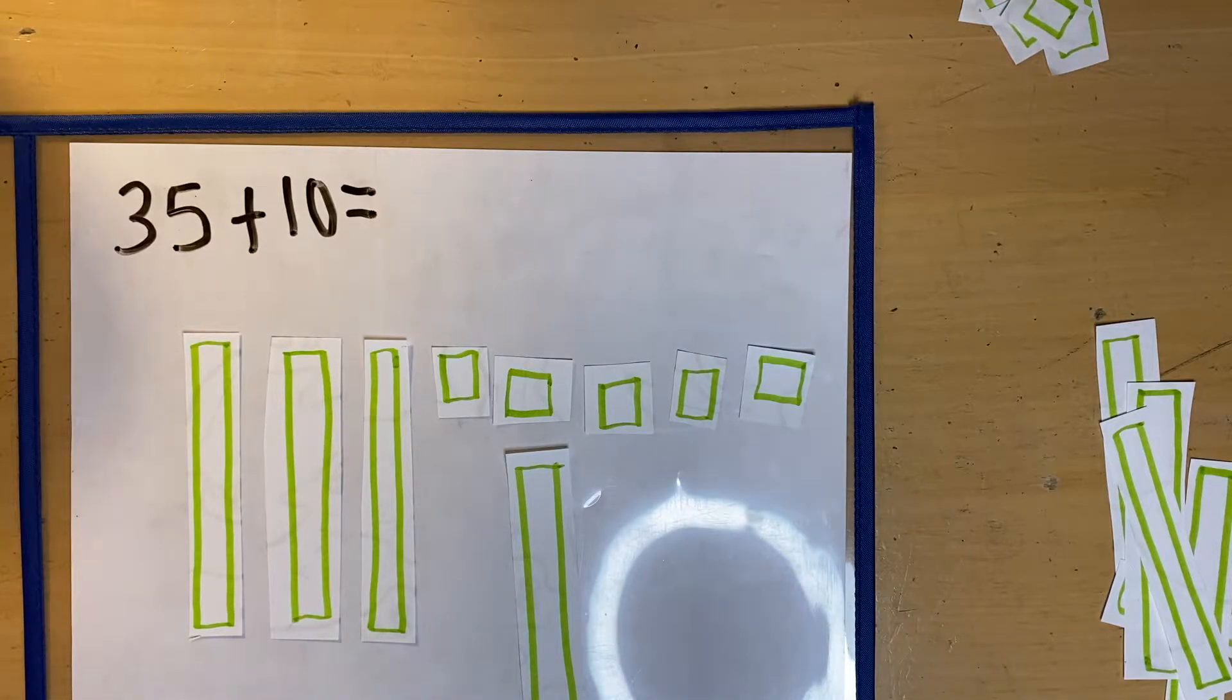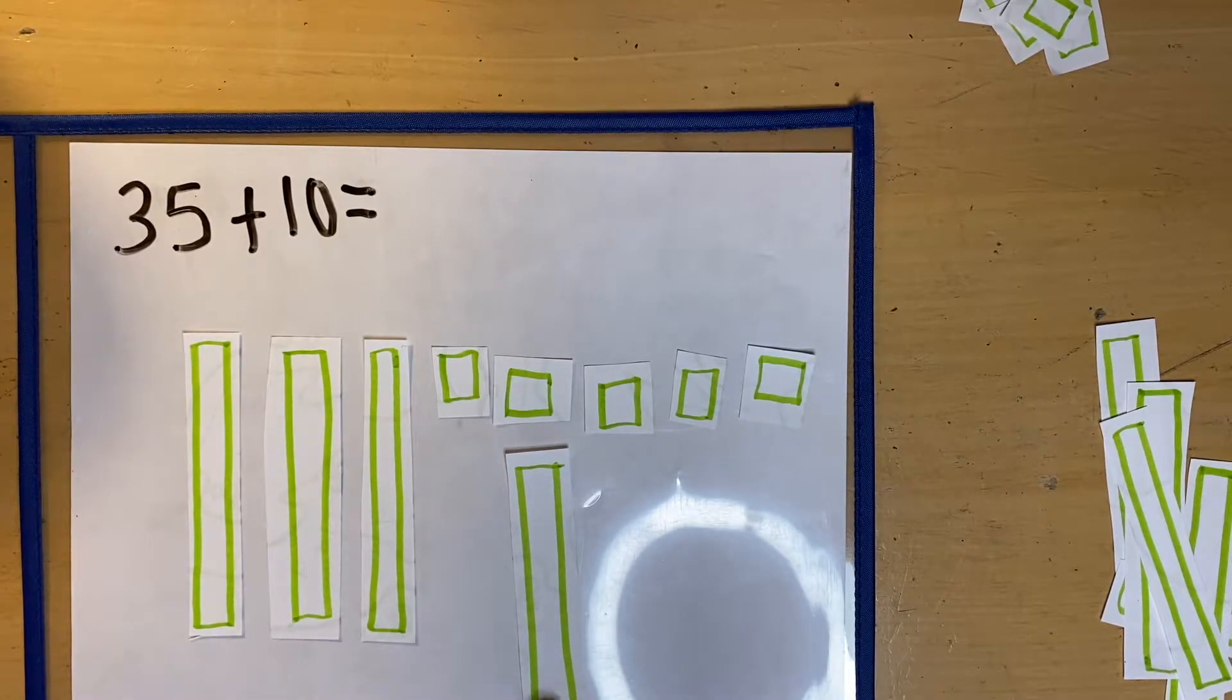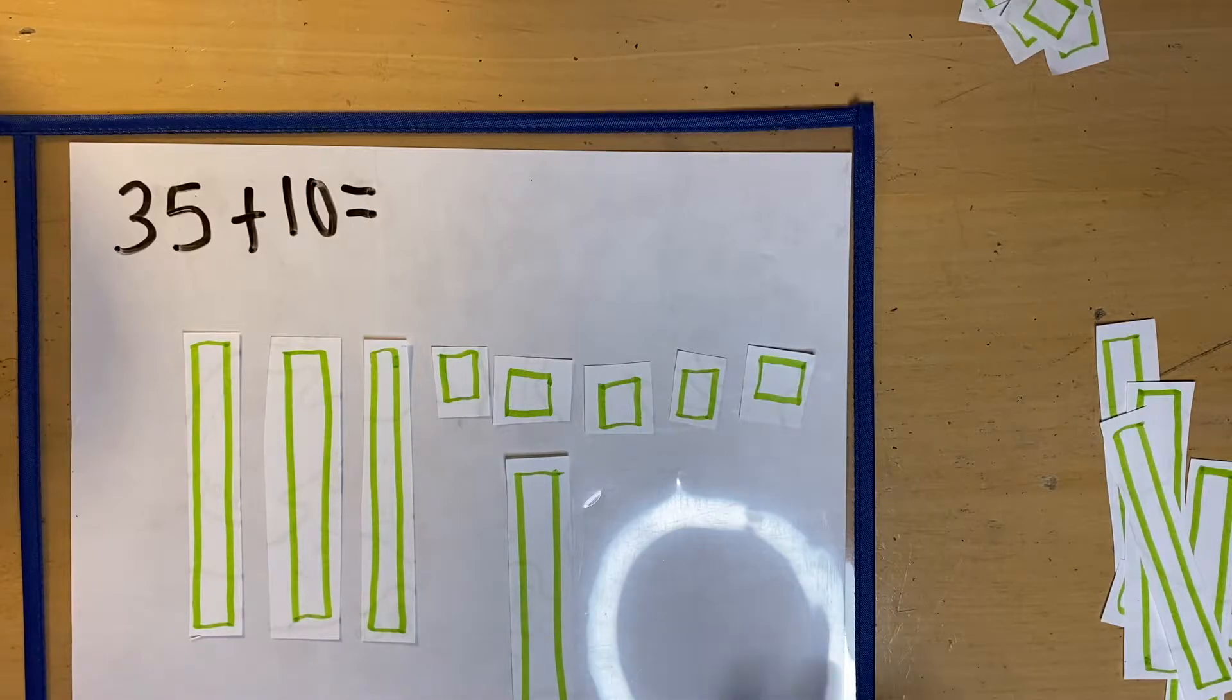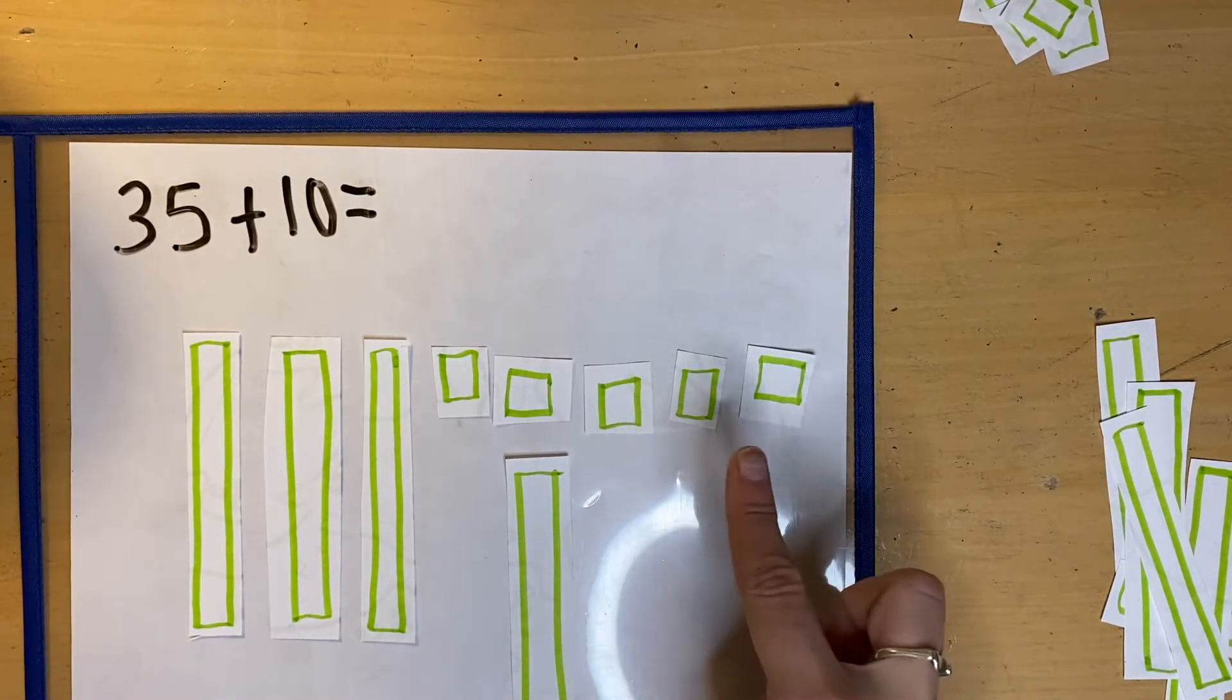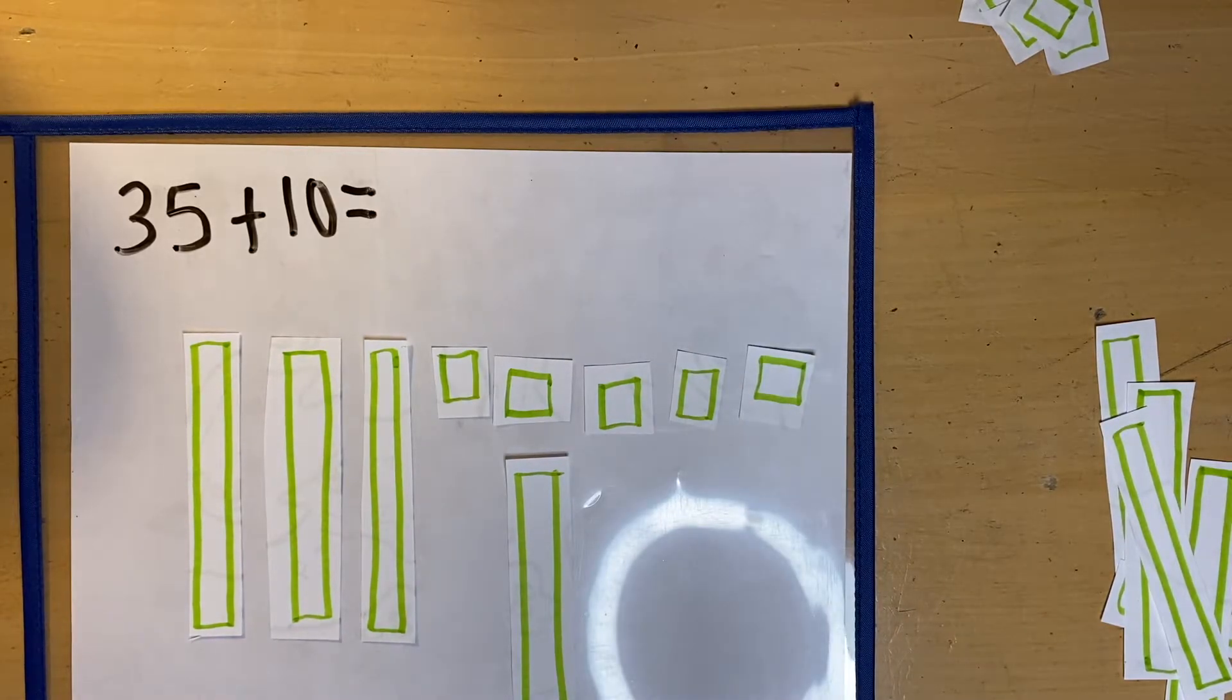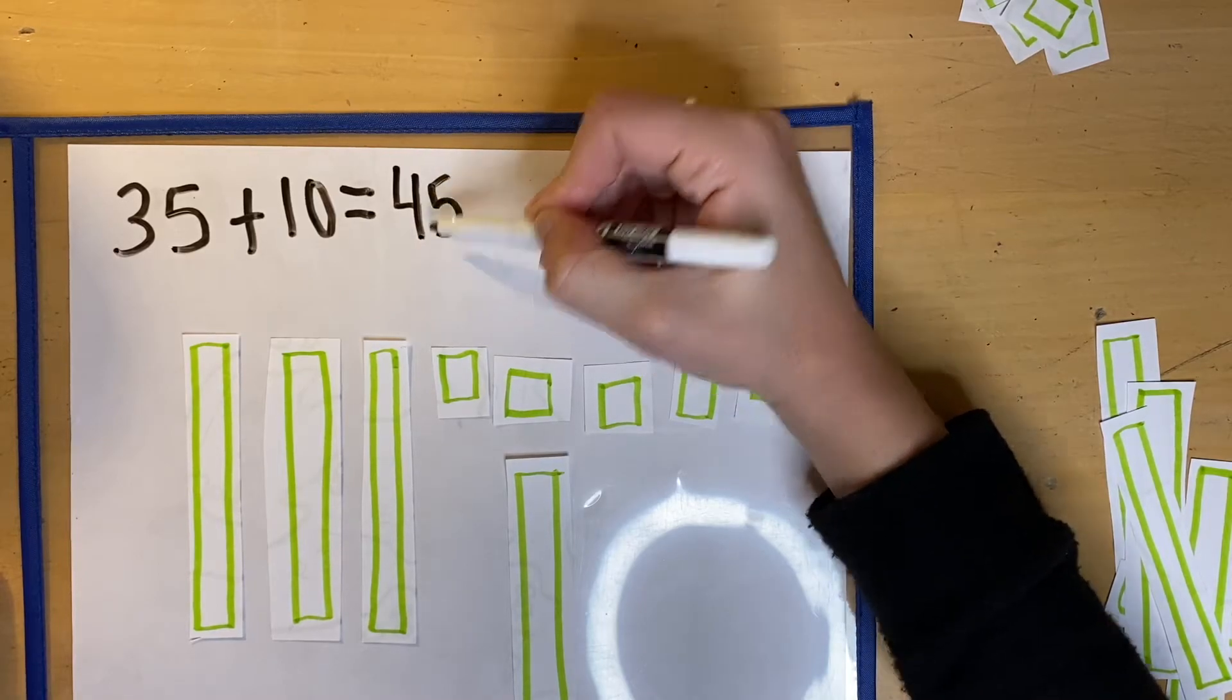So now I can count my 10s first and then my ones. So I would say 10, 20, 30, 40. Freeze. That's all my 10s. 41, 42, 43, 44, 45. So 35 plus 10 equals 45.